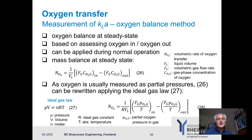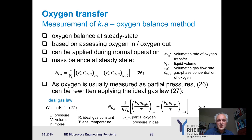Now that we understand what affects KLA, we want to design our bioreactor for an optimal KLA value. Once a bioreactor is purchased, design cannot easily be changed. Therefore, we need to measure KLA experimentally. There are two approaches: the dynamic method and the static method.